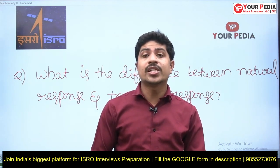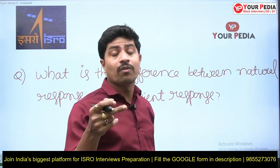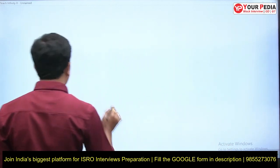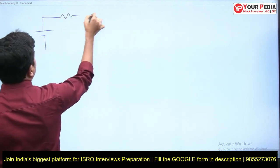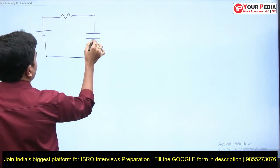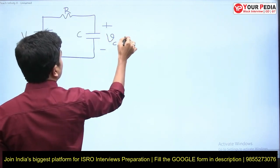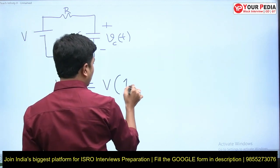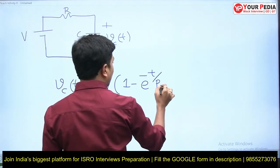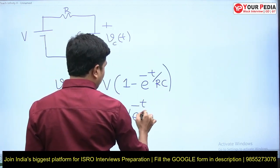I'll say both are not the same. Let's see the difference between natural response and transient response using an example. I am taking a series RC network with a DC input. I am giving voltage V, this is R, this is C, and the voltage across the capacitor I am taking as VC(t). The expression for VC(t) is: VC(t) = V(1 - e^(-t/RC)), which I'll write as V minus V·e^(-t/RC).